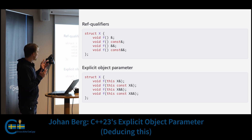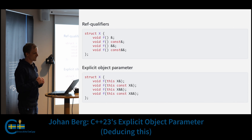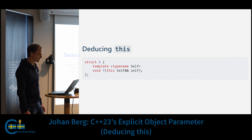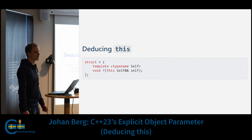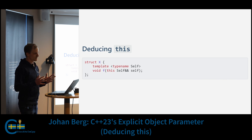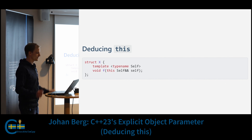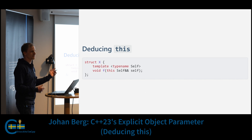But maybe we don't want to write all of these overloads. Instead we could make the function f a function template. Here we have a template parameter 'self' which is an explicit object parameter, as we can see by the 'this' keyword, and we're using a forwarding reference. The type of self would be deduced from the object that we call f on. So we could say we're deducing the type of 'this' — or 'deducing this' — and that's where that name comes from.